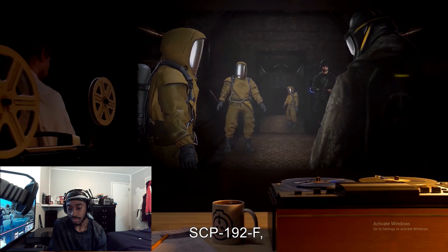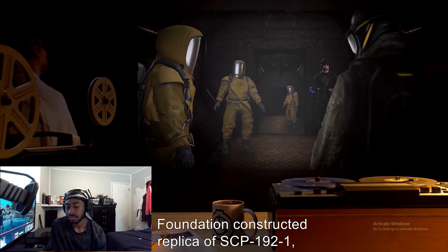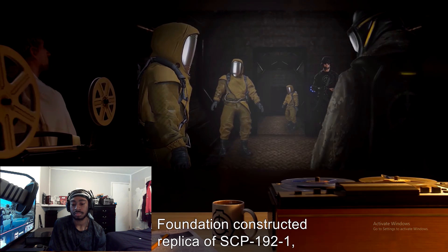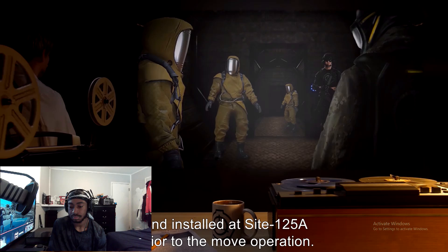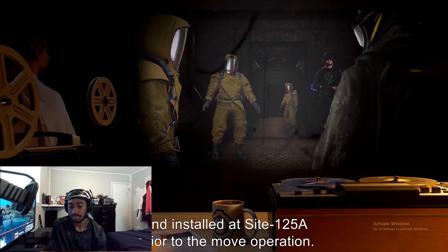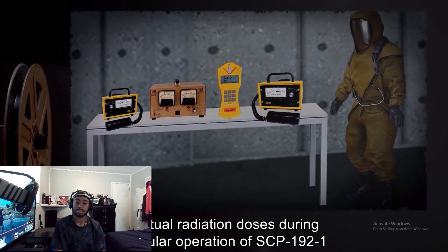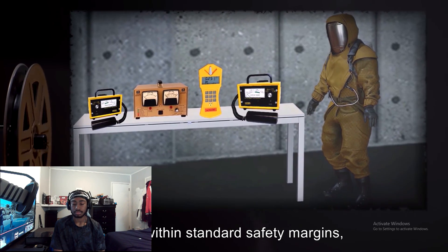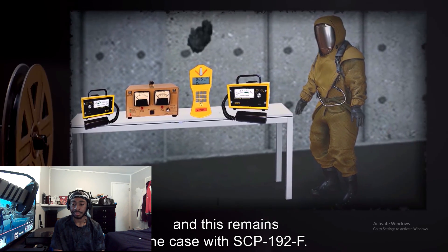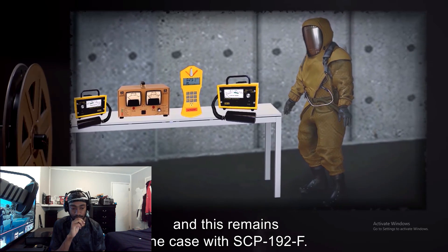SCP-192-F, a Foundation constructed replica of SCP-192-1, was constructed in 05-2014 and installed at Site-125-A prior to the move operation. Actual radiation doses during regular operation of SCP-192-1 were within standard safety margins, and this remains the case with SCP-192-F.